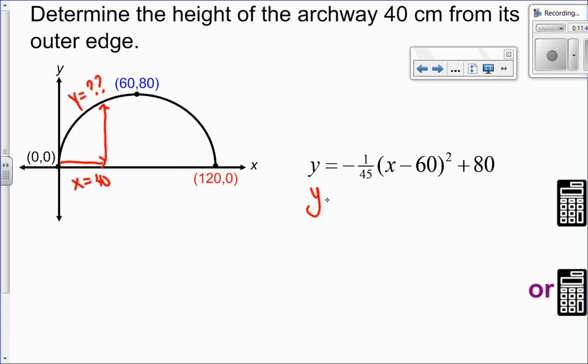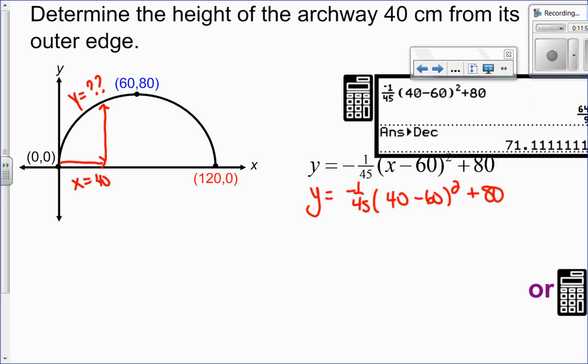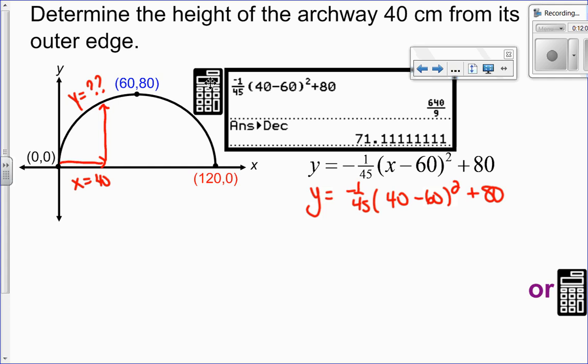y equals negative 1 over 45. Substitute in an x value of 40, times 40 minus 60 squared, and then add 80. So I'm just going to put that into my calculator to figure out what it is. So the reason that I changed it to a decimal is because if I asked you the height of the archway, you would not tell me 640 over 9 centimeters. You'd say it's about 71.1 centimeters. So for word problems, we like decimals.